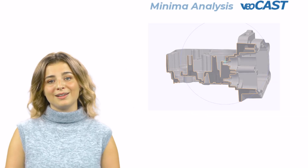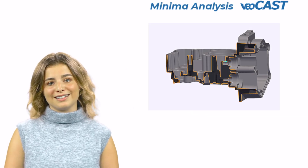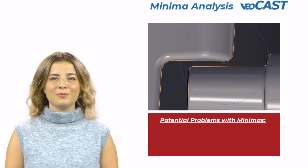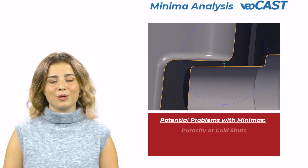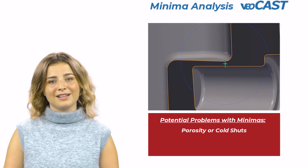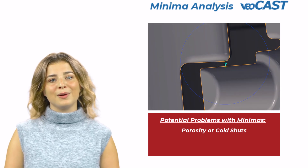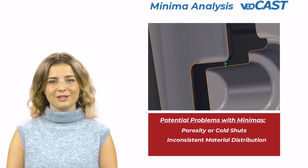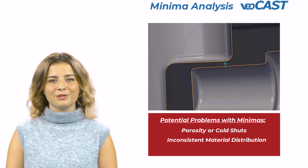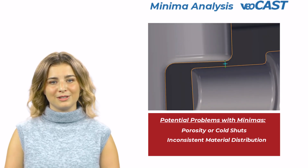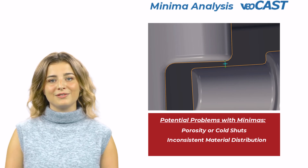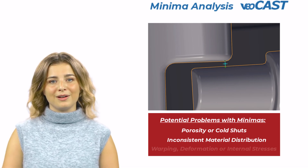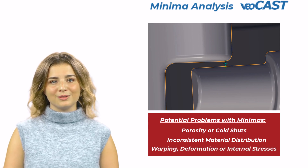Beginning with the minima analysis, let's examine its significance. Thin-walled sections in cast parts are prone to defects like porosity or cold shuts. These issues arise from uneven material distribution, presenting challenges in achieving a uniform and consistent quality throughout the part. They also cool and solidify more rapidly than thicker sections, increasing the risk of warping, deformation, or internal stresses.